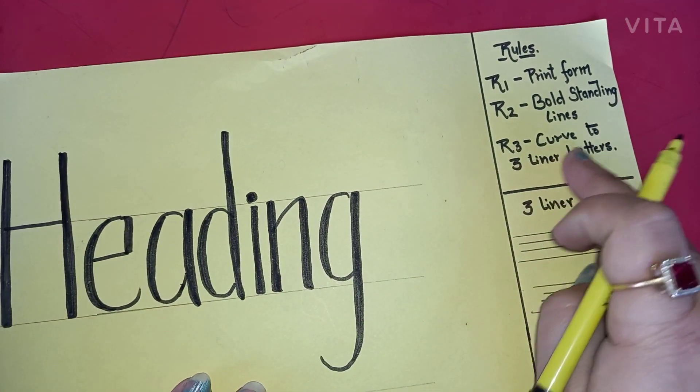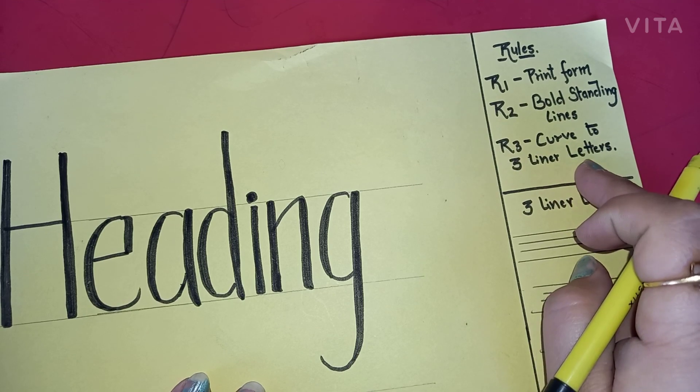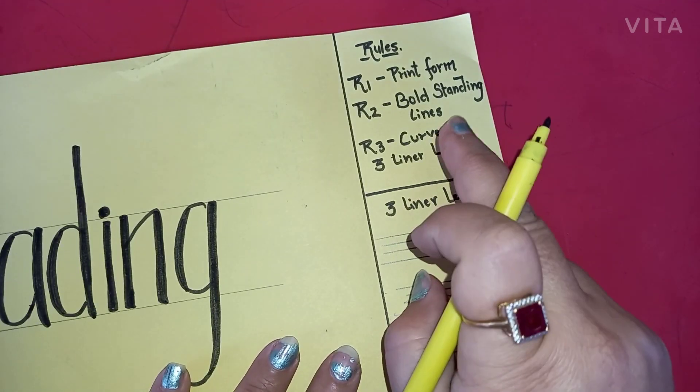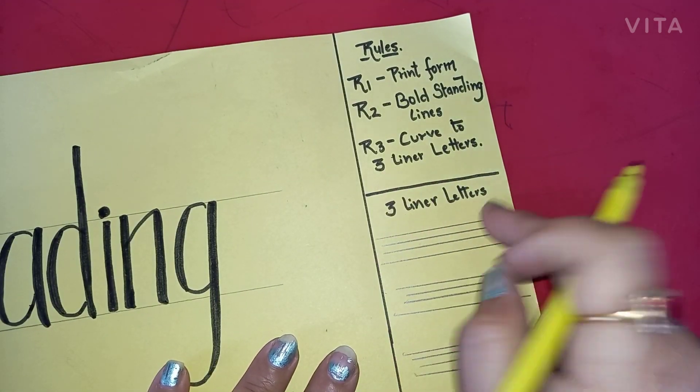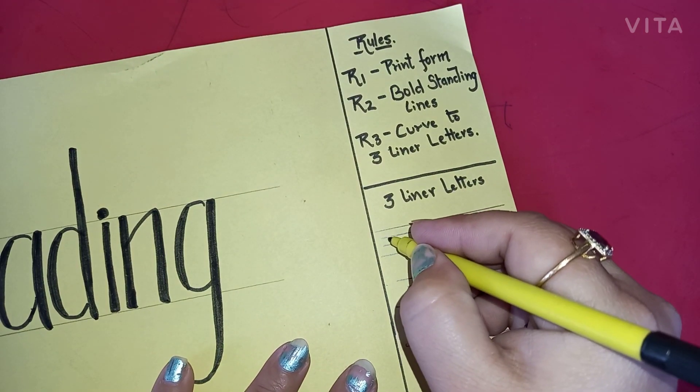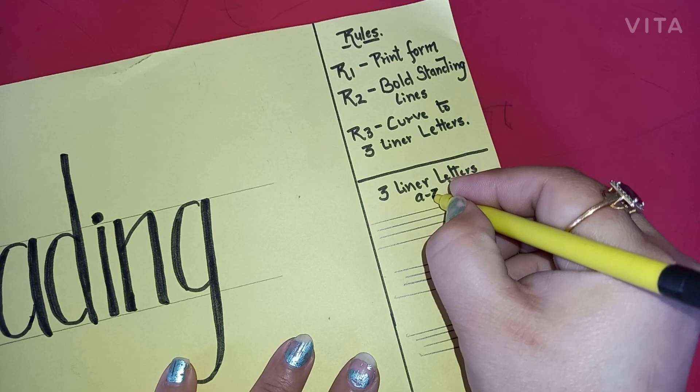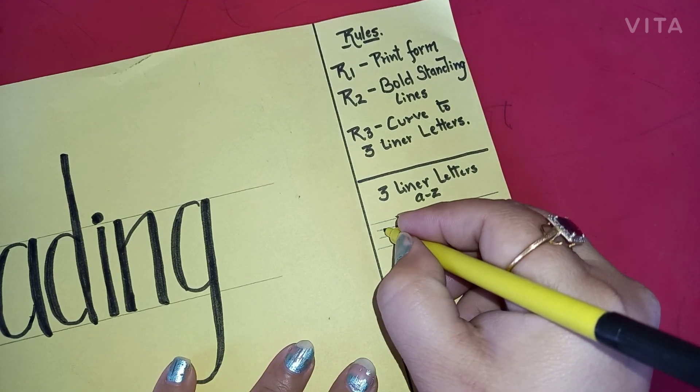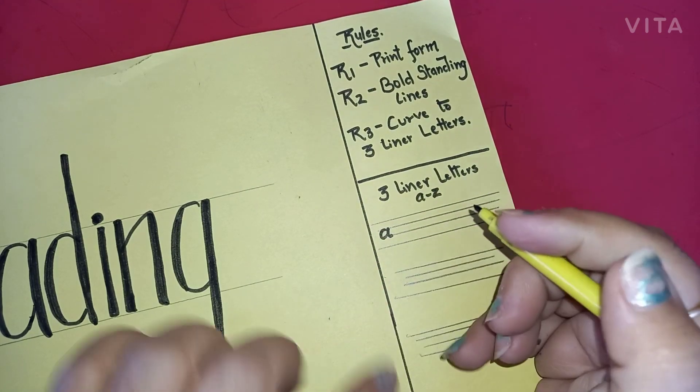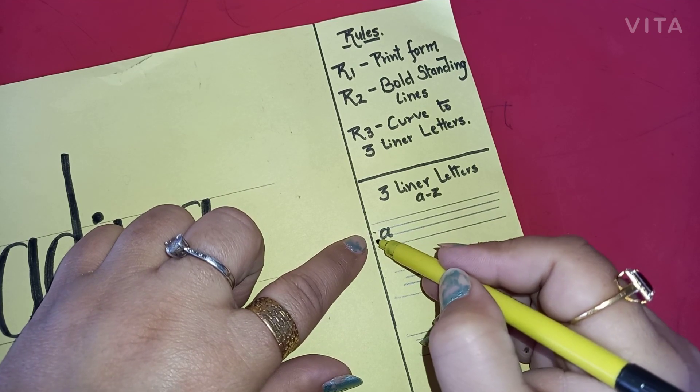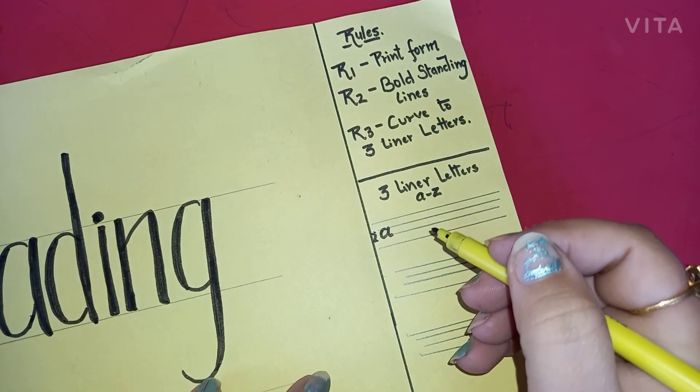After this, let's move to the third rule: curve to three-line letters. First of all, we should know what are the three-line letters. We are talking about the small a to z. For example, if we're writing letter 'a', it comes in between two lines, so that is a two-line letter.